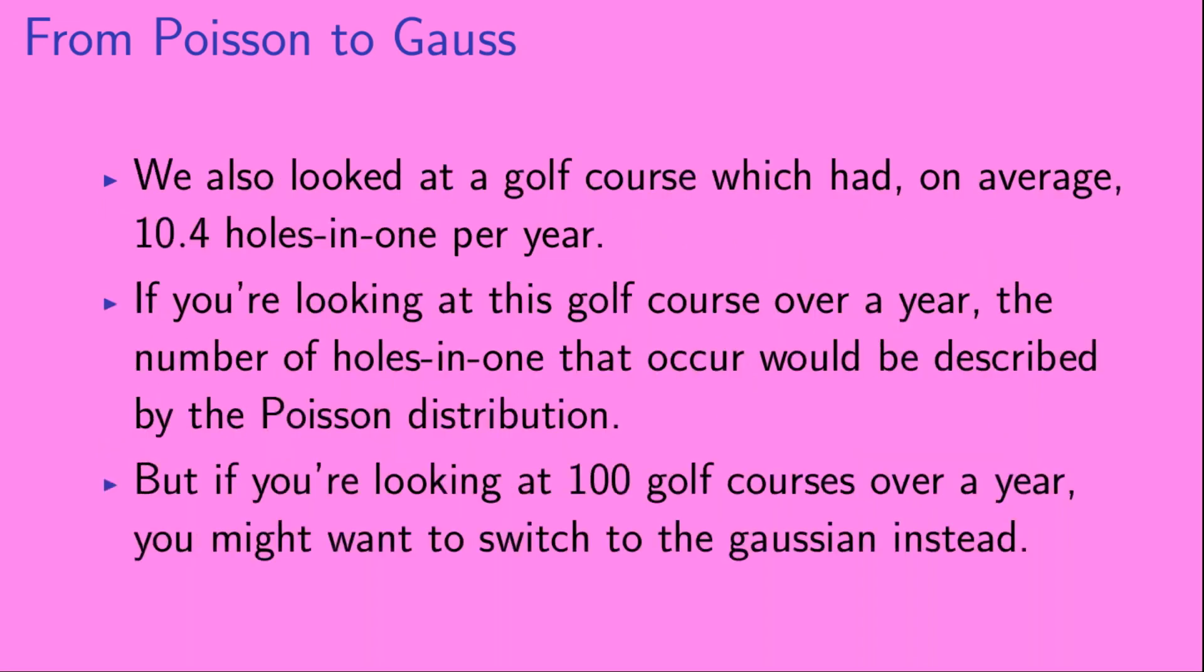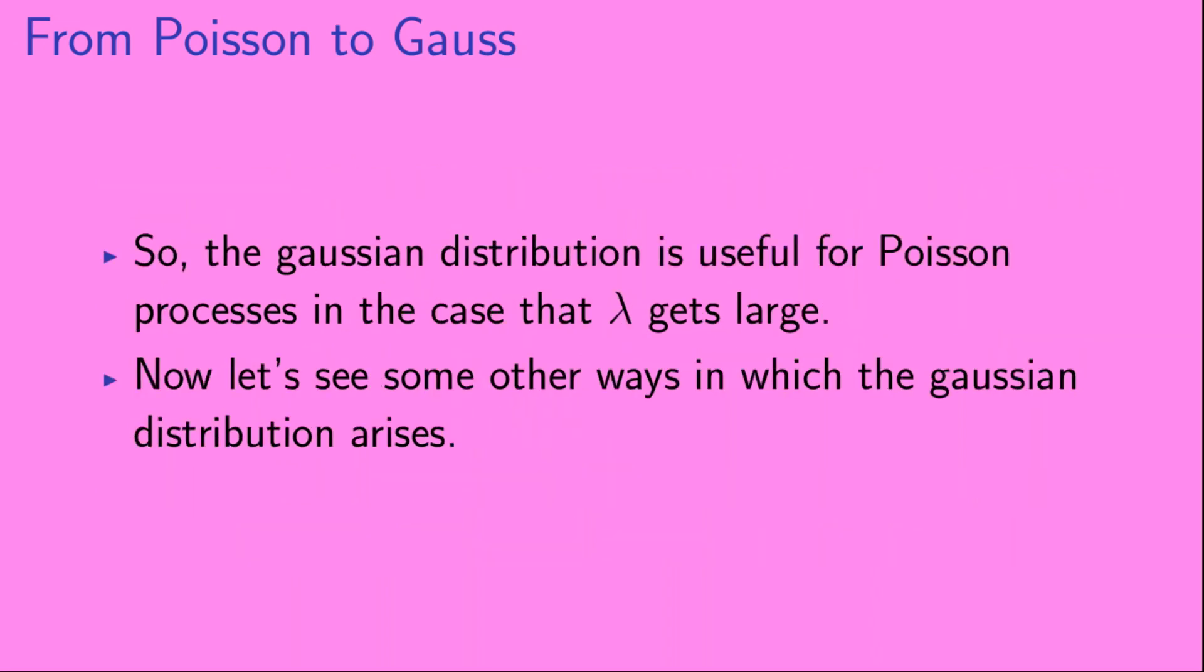We also looked at a golf course which had, on average, 10.4 holes-in-one per year. So, if you're looking at this golf course over a year, the number of holes-in-one that occur would be described by the Poisson distribution. But if you're looking at 100 golf courses over a year, you might want to switch to the Gaussian instead. So, the Gaussian distribution is useful for Poisson processes in the case that lambda gets large. Now, let's see some other ways in which the Gaussian distribution arises.